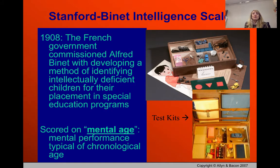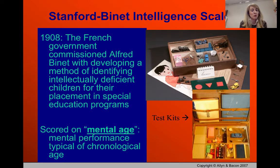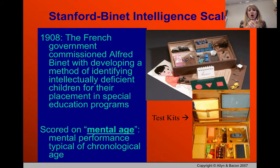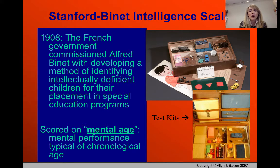The Stanford-Binet test is considered the first real intelligence test that worked to measure IQ. France had decided that all children would attend school, which created a new problem: kids were not all at the same level. They asked Alfred Binet to develop a test to identify children who were intellectually deficient so they could receive extra help. Importantly, Binet made no argument about whether the deficiency was genetic in nature — the goal was simply to identify children who needed assistance.